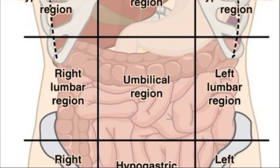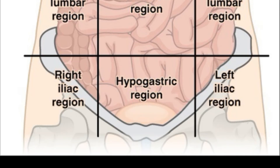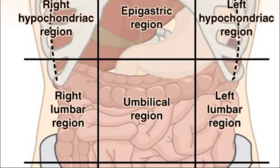In the umbilical region you've got the stomach, pancreas, small intestines, and transverse colon. Right lumbar: the tip of the liver, small intestines, ascending colon, and right kidney. Left lumbar: small intestines, descending colon, and left kidney. Hypogastric region: small intestines, sigmoid colon, and bladder. Right iliac: small intestines, appendix, cecum, and ascending colon. Left iliac: small intestines, descending colon, and sigmoid colon.